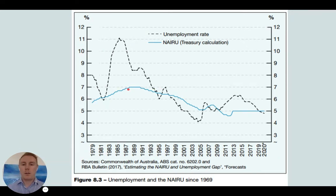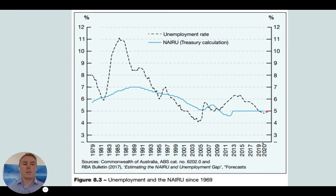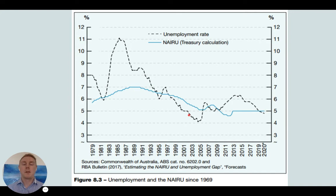Here we can see the Treasury's estimate of the NIRU — it's been getting lower and is estimated to be around four and a half to five percent. Last June in 2019, Governor Philip Lowe estimated around four and a half percent. We can see that sometimes our unemployment is well above the NIRU, meaning there's a lot of cyclical unemployment. But at other times, the unemployment rate drops below the NIRU, and in those cases normal macroeconomic policy isn't going to work — we need to look at other policies instead.